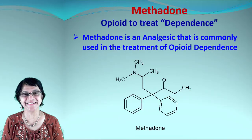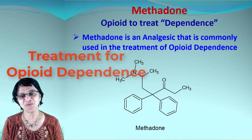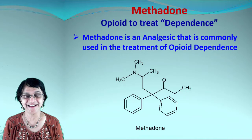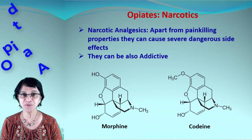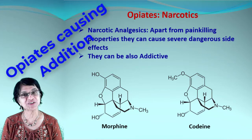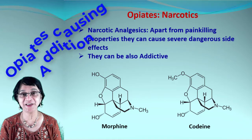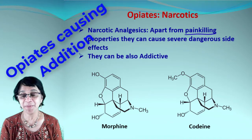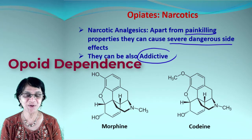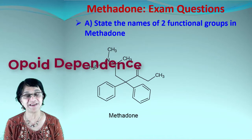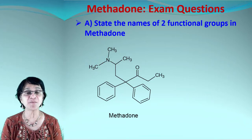This video is about methadone, the opioid which is used for treating opioid dependence. Methadone is also used as an analgesic. Here is the structure of methadone. For reference, here are the structures of morphine and codeine — opiates also called narcotics. They work well as painkillers but have severe dangerous side effects, including causing addiction or dependence. Methadone is used to treat that dependence to some extent. We'll focus on exam questions about methadone.